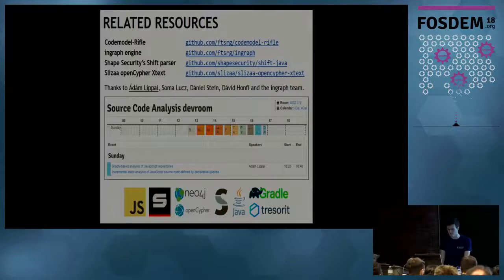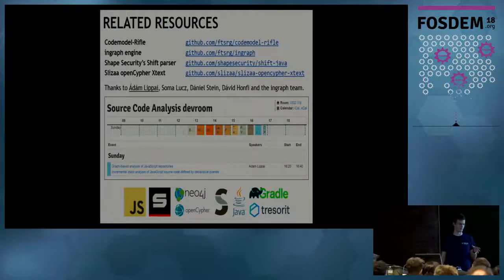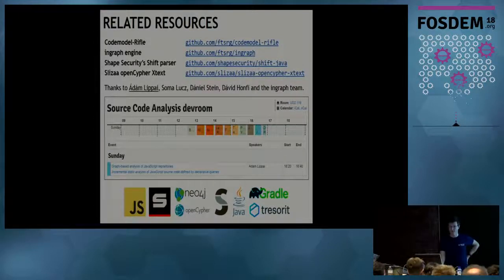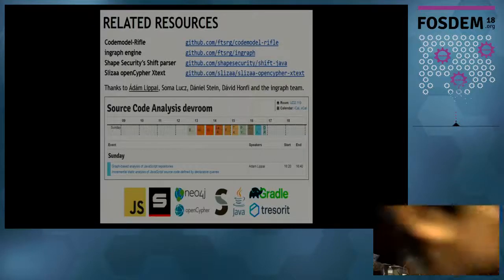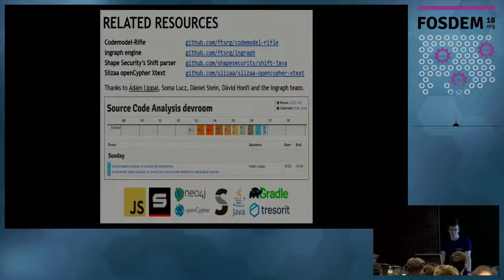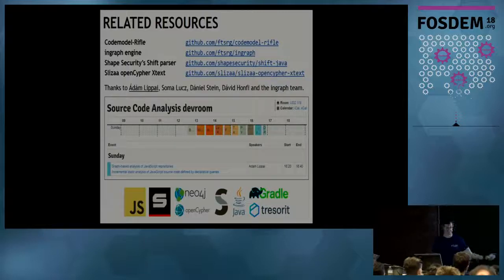We had a lot of struggle finding a parser that works well. We tried the Babel parser, but the problem is it doesn't provide scope information — just the AST. We ended up using Shape Security's Shift-Java library, which is an AST builder that has a lot of scoping information and is very nicely written Java code. The problem is it's not really maintained, so we have to maintain it ourselves and are currently adding ECMAScript 2017 features like async and await.